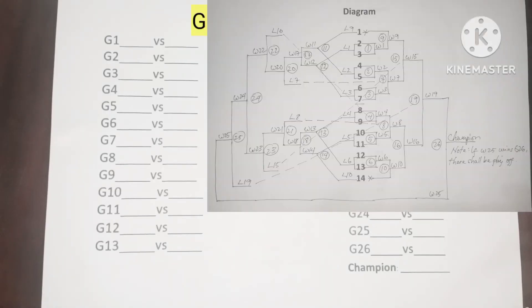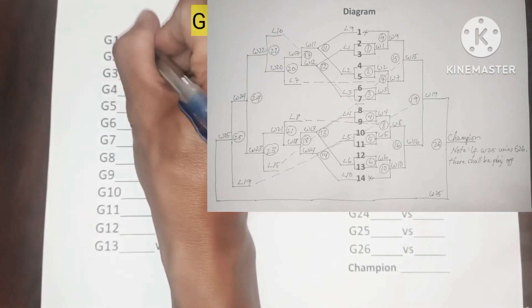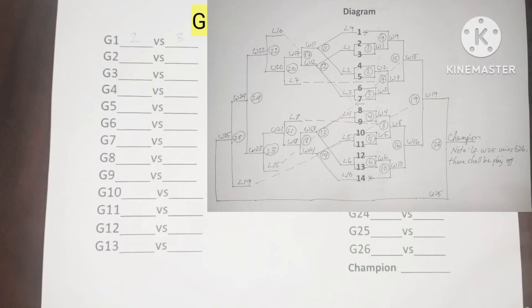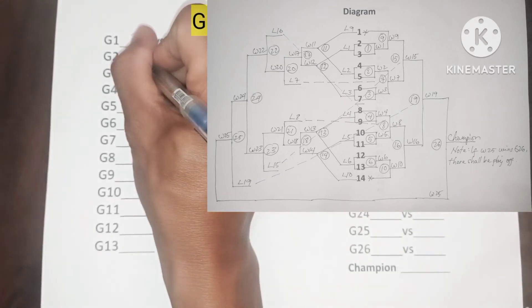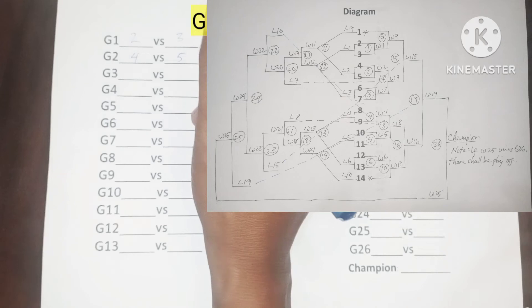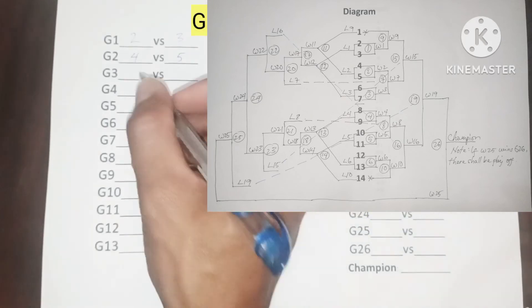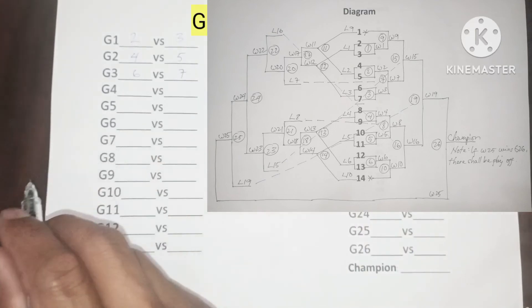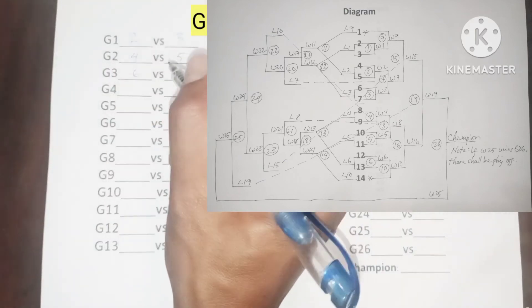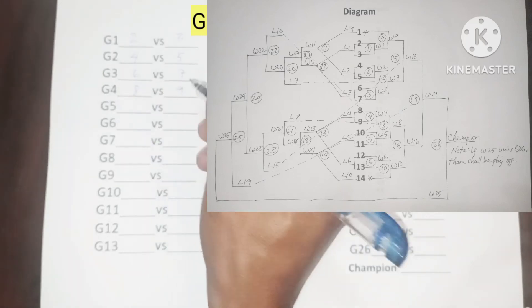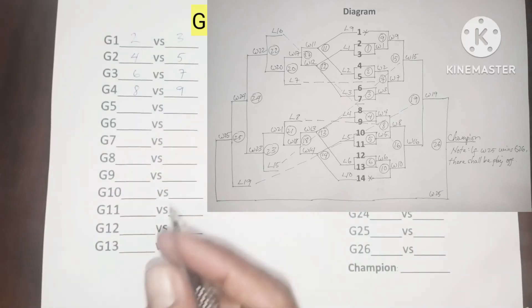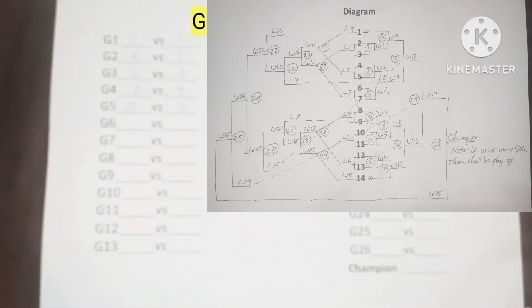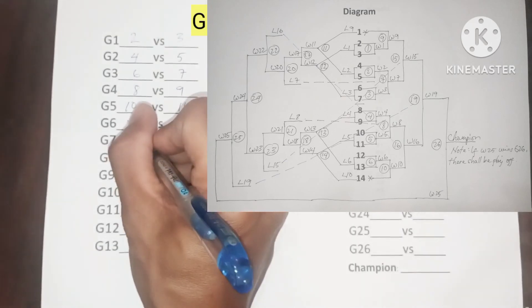In game 1, we have 2 versus 3. In game 2, we have 4 versus 5. In game 3, we have 6 versus 7. In game 4, we have 8 versus 9. In game 5, we have 10 versus 11. In game 6, we have 12 versus 13.